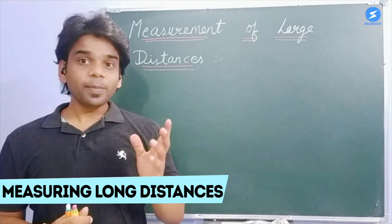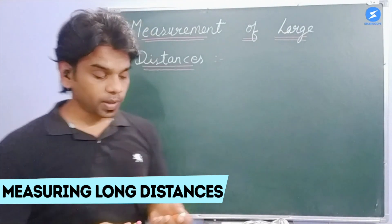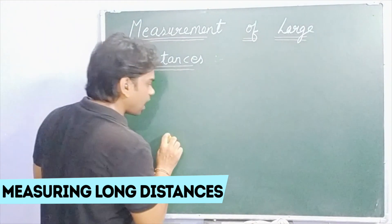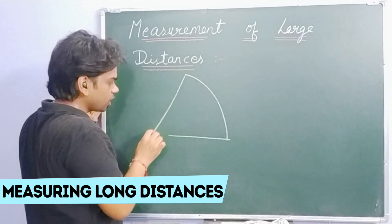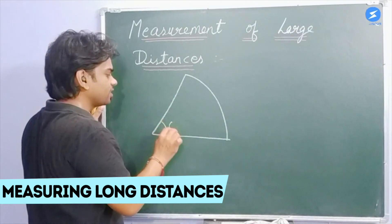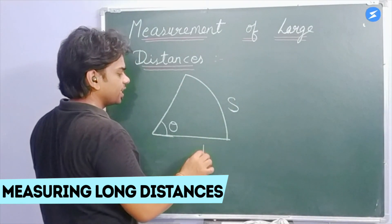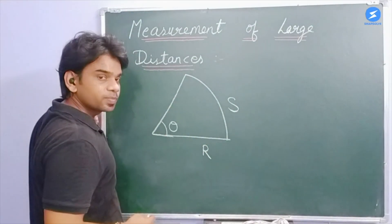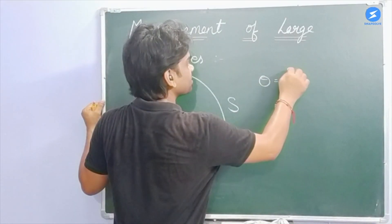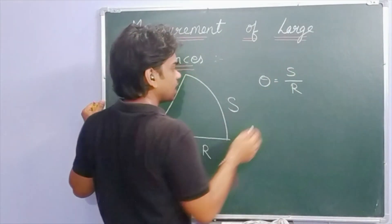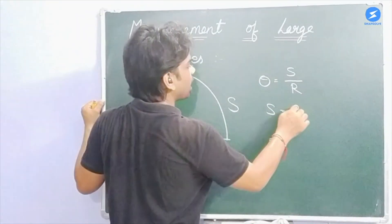We know that if we have to measure an angle in radians, the method is very simple. If we have an arc with a center, the angle theta, an arc length s, and a radius r, then theta is given as s divided by r. So the arc length s will be equal to r times theta.